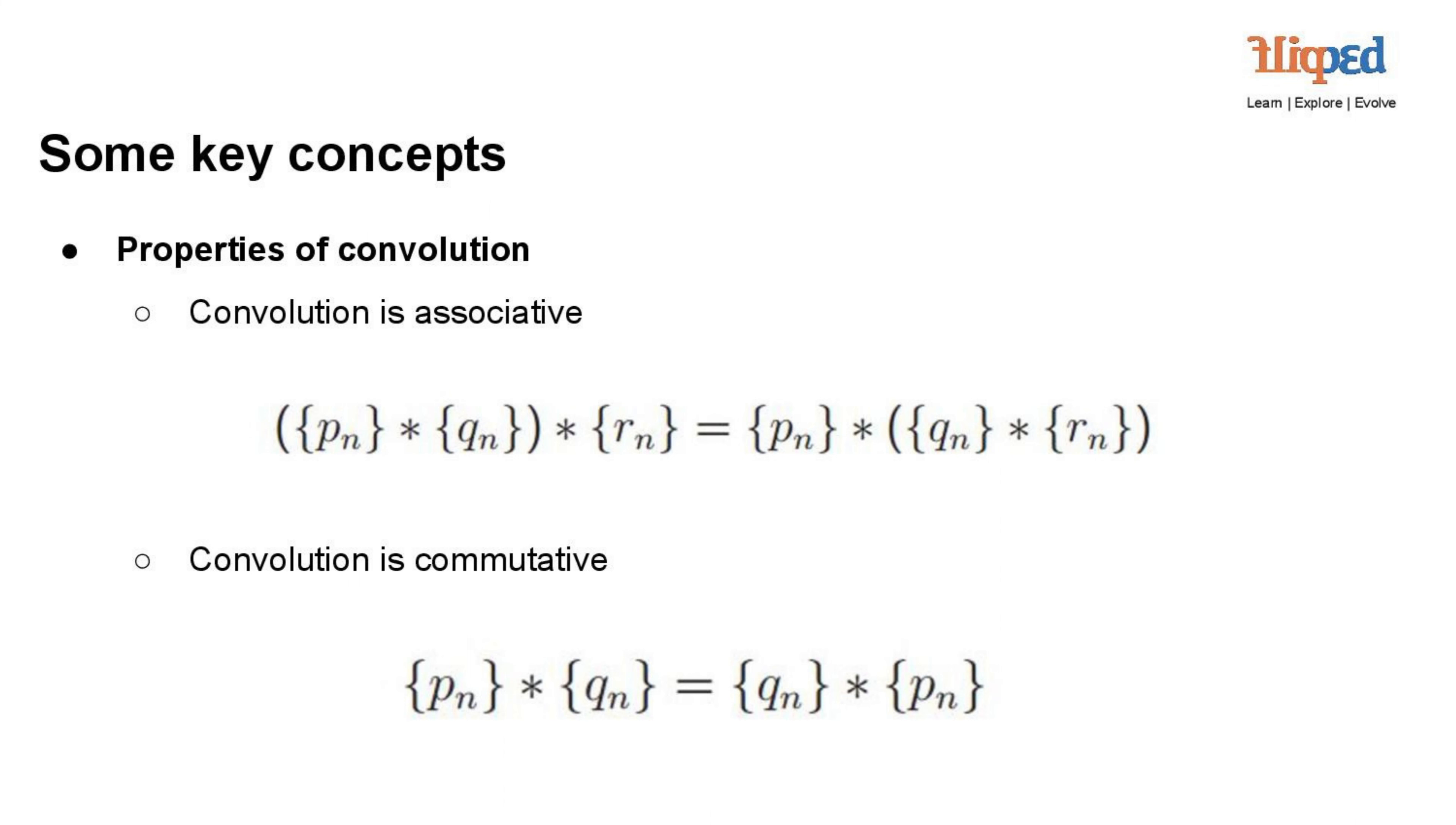p(n) into q(n) equals q(n) into p(n). This property allows flexibility in processing signals and simplifies certain mathematical manipulations.